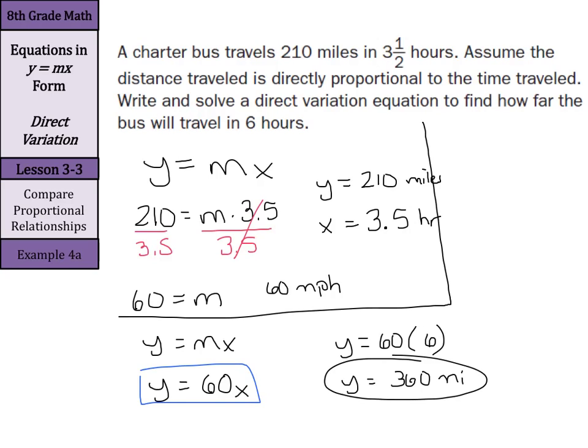Our distance y is going to equal 60 miles an hour times our amount of time x. Now once we have this equation, we can put anything in that we want for x, such as 6 hours. Take our 6 hours times the 60 to get our distance of 360 miles.